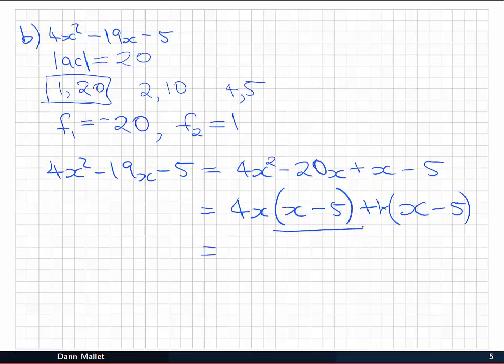Now I have that common factor that I want, which I can pull out the front, leaving me with 4x from the first term and +1 from the second. And that's our factored form for 4x² - 19x - 5: (4x + 1)(x - 5).